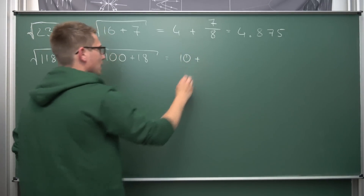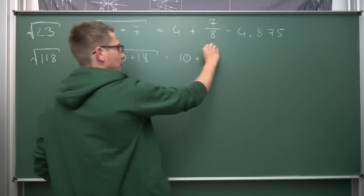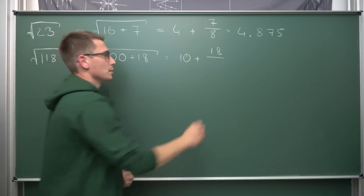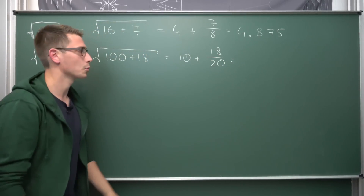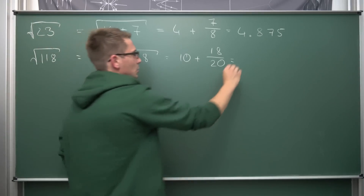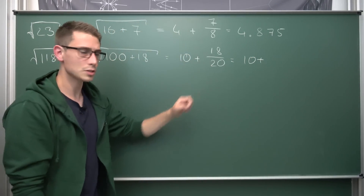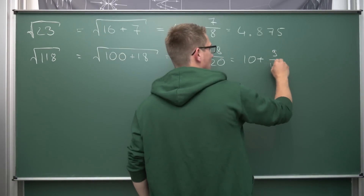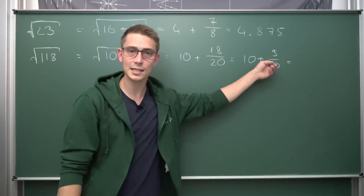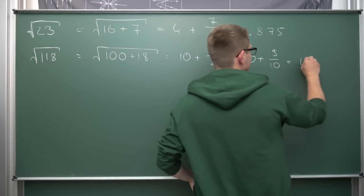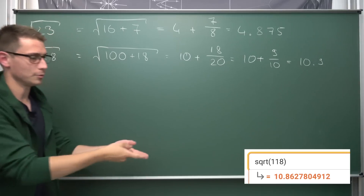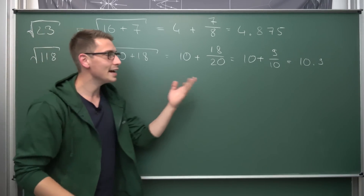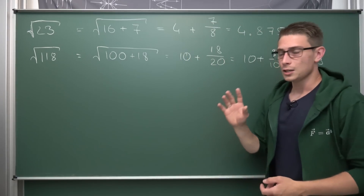Square root of 100 gives us 10. Put it to the front: 10 plus 18 over 20. Canceling the 2s in numerator and denominator gives us 9 over 10, which is 0.9, giving us 10.9. And this is the actual value of the square root of 118 — really close. This method always works.